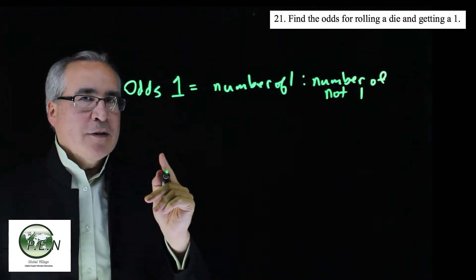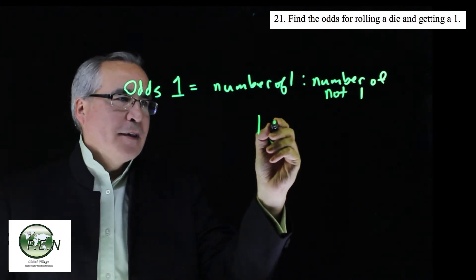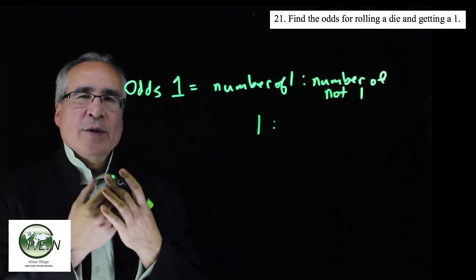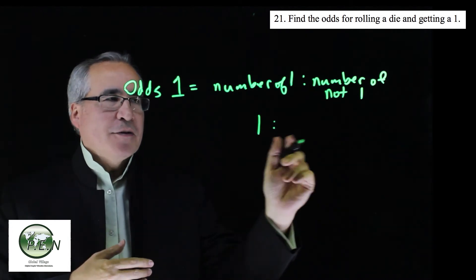So on a die, how many 1s are there? There is 1. On a die, how many sides do not have a 1 on it? There's 5.